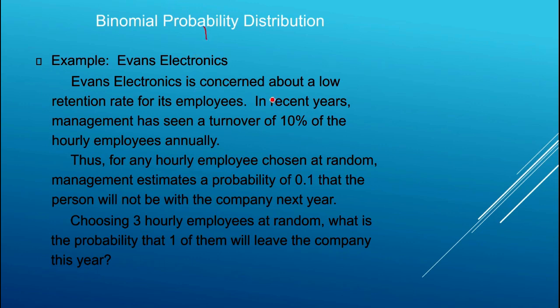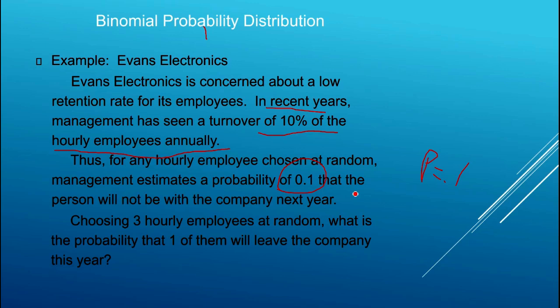Now we look at the Evans Electronics example. Evans Electronics is concerned about employee turnover. In recent years, they've noticed that about 10% of hourly employees leave annually. For any hourly employee chosen at random, the probability of leaving is p = 0.1, and 1 minus p = 0.9, so an individual has a 90% chance of staying and a 10% chance of leaving. We define leaving as a statistical success. Every time we select an hourly employee and observe whether they leave, we're running one trial in a binomial experiment.